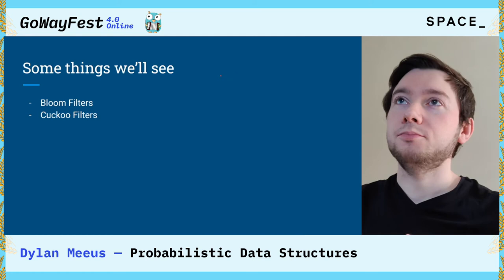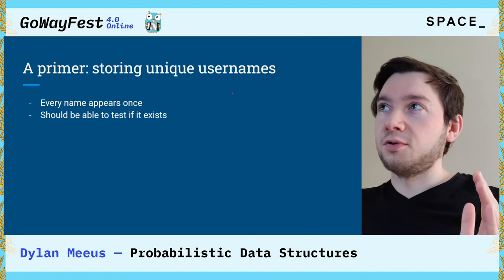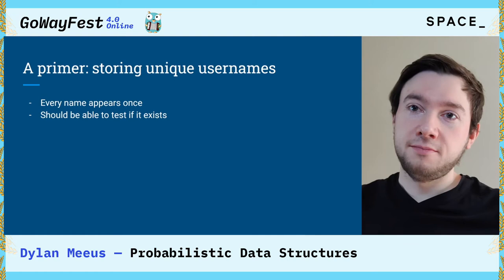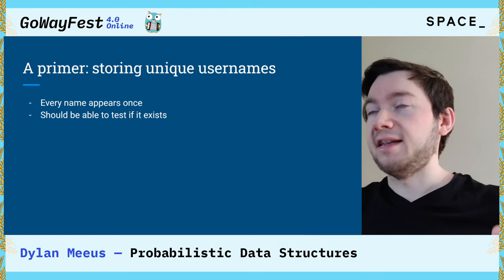But first, let's set a problem statement that we will carry with us along the entire talk. Let's imagine that you're building an application and you want to store unique user names. The requirements are that each user name can only appear once, and you should be able to test if the user name is taken or not.